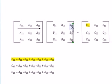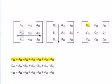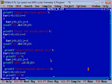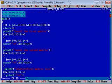Similarly, the expression for C21 is coming by going this way: A21 multiplied with B11, A22 multiplied with B21, and A23 multiplied with B23. So now let us go for the C program for matrix multiplication. This is a very simple program I have written for matrix multiplication.